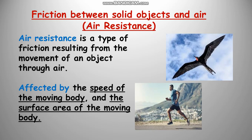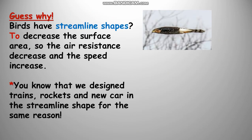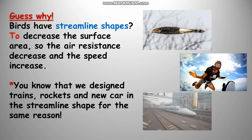and the second one is the surface area of the moving object. Guess why birds have streamline shapes? To decrease the surface area of the bird, so the air resistance decreases and their speed increases. By the same idea, we designed trains, rockets, and new cars in the streamline shape design for the same reason: decreasing the surface area, which results in increasing the speed.